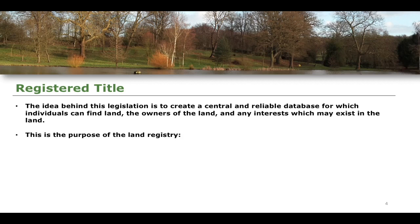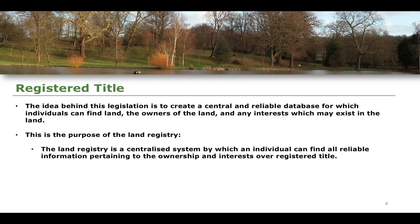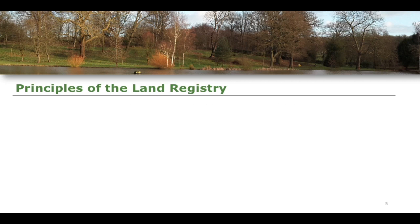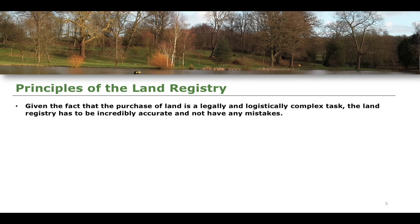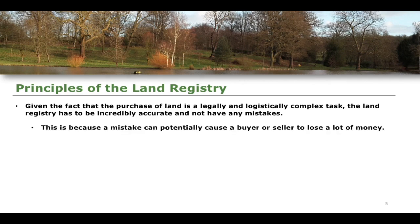The Land Registry holds physical documentation of registered title, and you can also look on the Land Registry online nowadays. It is a centralised system by which an individual can find all reliable information pertaining to the ownership and interests that exist over land. Given that the purchase of land is legally and logistically complicated, the Land Registry has to be incredibly accurate and cannot have any kind of mistakes.